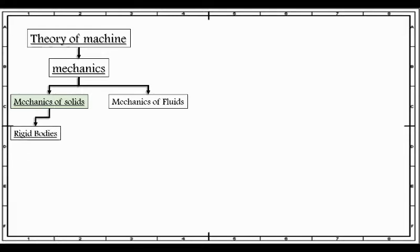Mechanics of solid is further divided into two categories based on the types of solid bodies. One is rigid bodies.